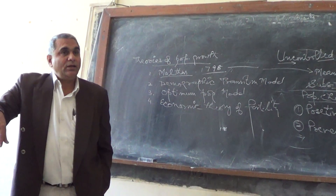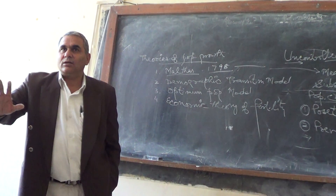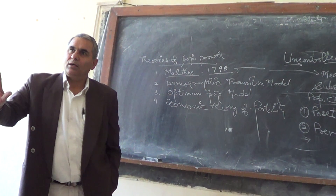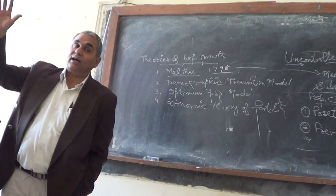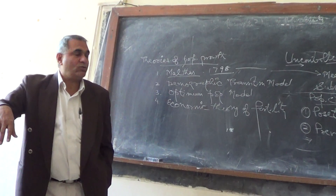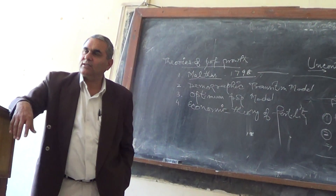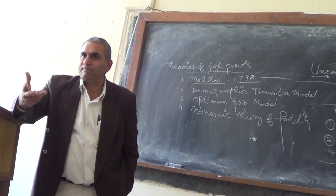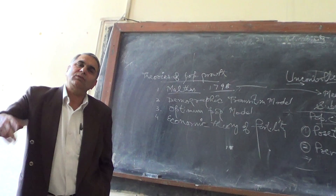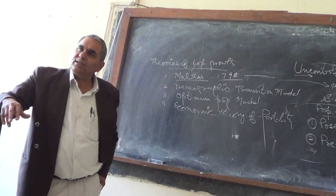Nature has a particular limit. When demand is high, nature will check population automatically. If man does not check, nature will — through food shortage, malnutrition, under-nourishment, and disease. That check is called a positive check.